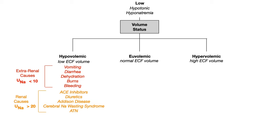To be clear: in both extra-renal and renal causes, you have low sodium and low serum osmolality. The only difference is urine sodium — it's low in extra-renal causes, because sodium is lost upstream of the kidney, and elevated or normal in renal causes, because fluid is lost through the kidney.